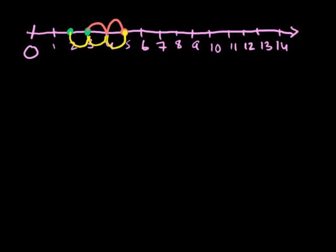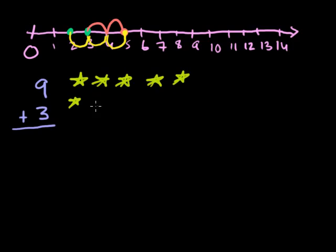But let's just get some practice with larger numbers. So let's say I wanted to add 9 plus 3. Well, there's a couple of ways we could do it. We could draw circles again—maybe I'll draw stars: 1, 2, 3, 4, 5, 6, 7, 8, 9. That's 9 stars. And then I add 3 stars to it: 1, 2, 3 stars.